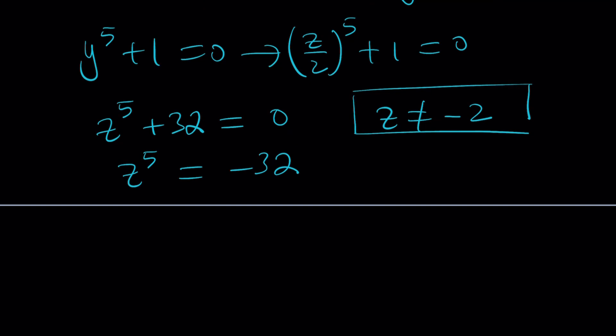Let's write negative 32 as a complex number, let's complexify it. Negative 32, its modulus is 32. And its argument is going to be pi because you're looking at a negative real number on the real axis but on the negative side. So the angle is pi, but you can always add multiples of 2 pi to it. Let's write it as i times pi plus 2 pi n.